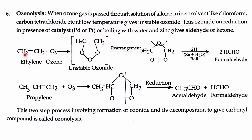The double bond gets broken down, forming one aldehyde and a different aldehyde. This gives acetaldehyde and formaldehyde. It is a two-step process involving the formation of an ozonide, which then decomposes to form a carbonyl compound.